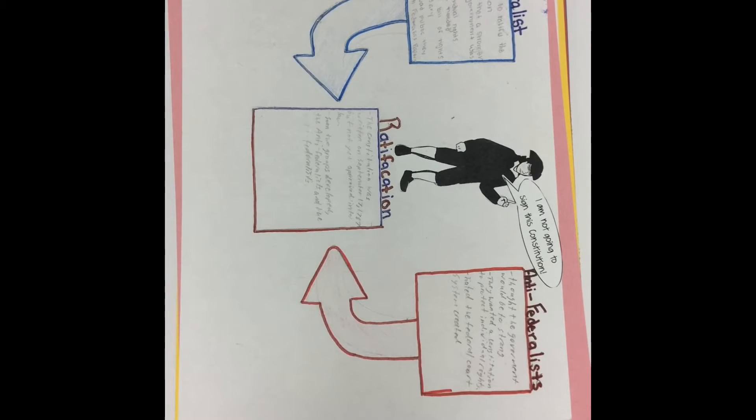The Anti-Federalists thought the government would be too strong. They wanted the Constitution to protect individual rights and opposed the federal court system that was created. The ratification of the Constitution was written in September 1787, but not yet approved into law. Soon, two groups developed: the Anti-Federalists and the Federalists.